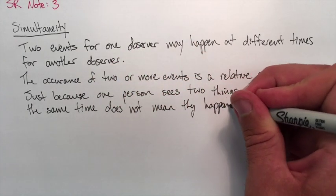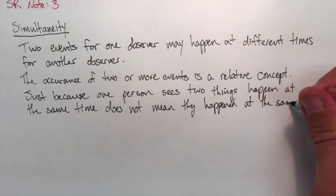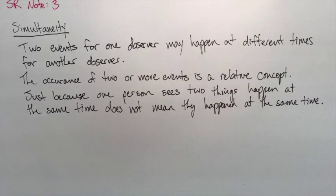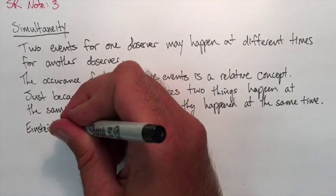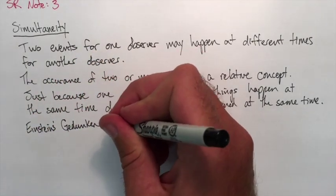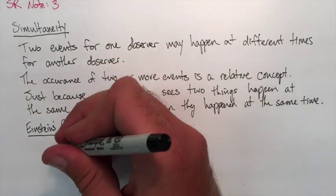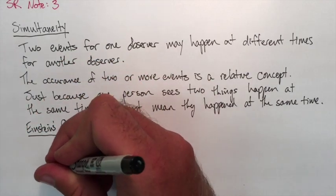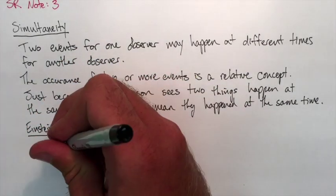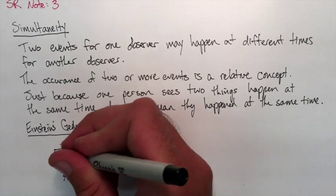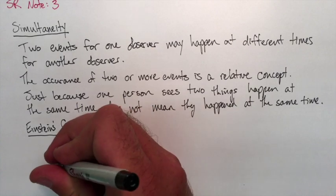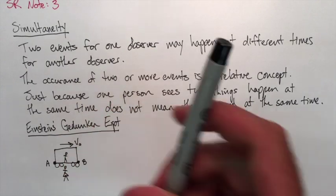Gedanken is just a German word for a thought experiment. So this is how it's going to be set up. Pretend we have a train moving to the right. On this train, there will be a boy standing—we'll call him Bob—standing exactly in the middle. And outside of the train, a girl will be standing: Alice.